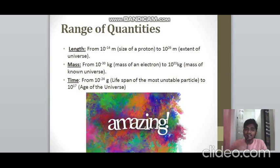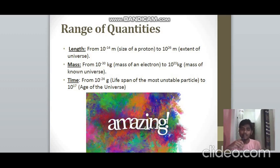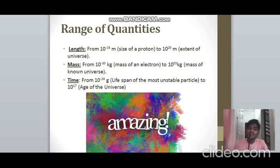The range of physical quantities: for length, it spans from 10⁻¹⁴ m (size of a proton) to 10²⁶ m (extent of the observable universe). For mass, it ranges from 10⁻³⁰ kg (mass of an electron) to 10⁵⁵ kg (mass of the observable universe). For time, it ranges from 10⁻²⁴ s (lifetime of the most unstable particle) to 10¹⁷ s (age of the universe).